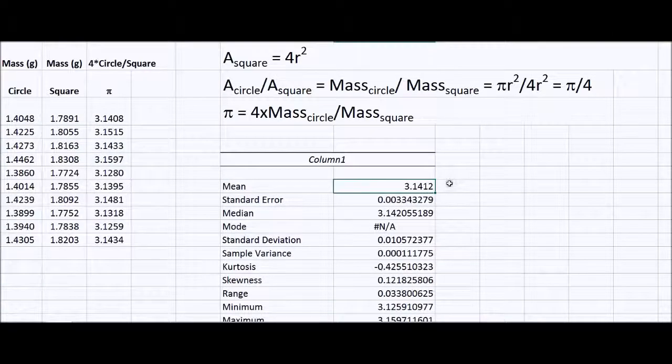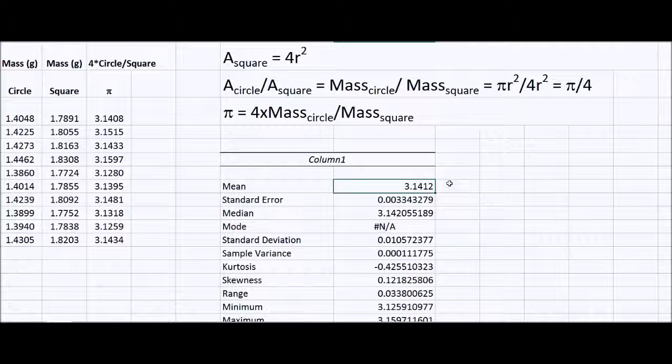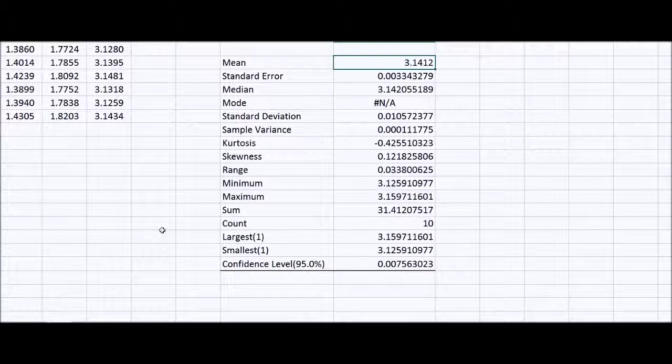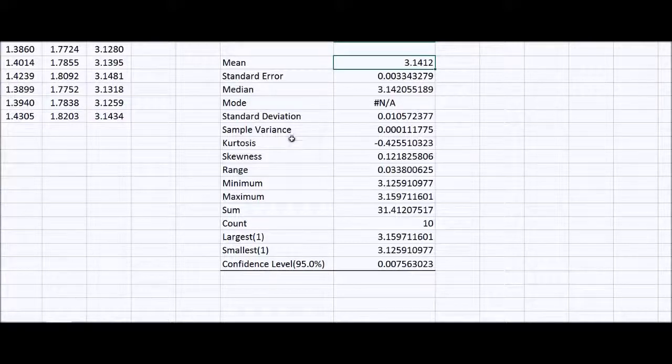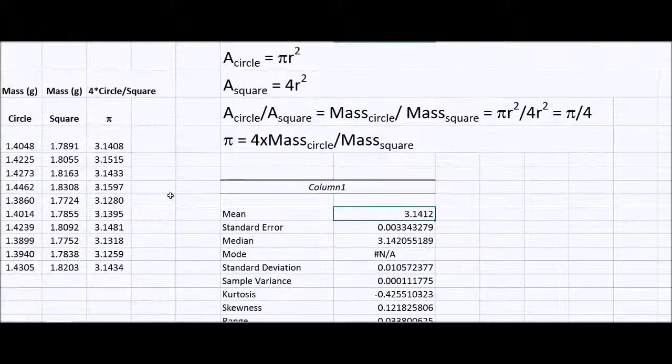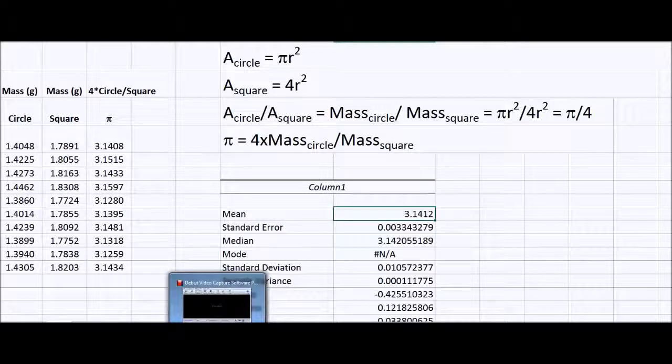So it's a cute little exercise to experimentally measure pi. All you need is scissors and something to make a circle. You do need a balance. I was able to use a balance to four places after the decimal, but you could do it with a tenth. You won't get as many significant figures. But it's a nice little exercise. You can illustrate what pi is and do some statistics as well. Thank you for your attention. I'll see you next time.